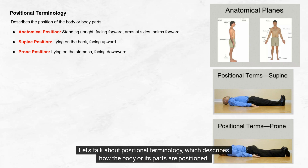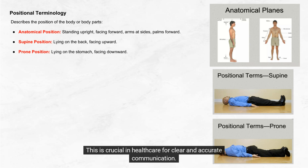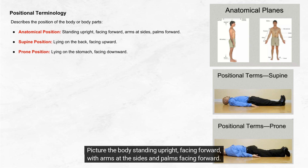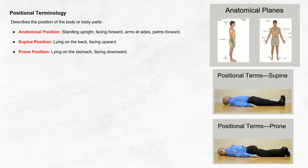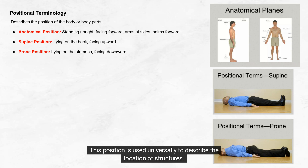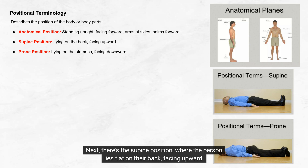Let's talk about positional terminology, which describes how the body or its parts are positioned — crucial in healthcare for clear and accurate communication. First, we have the anatomical position, which is the standard reference point. Picture the body standing upright facing forward, with arms at the sides and palms facing forward. This position is used universally to describe the location of structures. Next, there's the supine position, where the person lies flat on their back facing upward. This position is commonly used during surgeries or examinations of the front of the body.